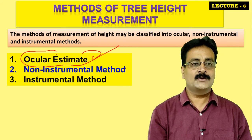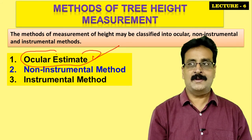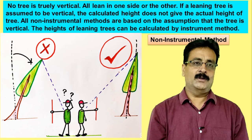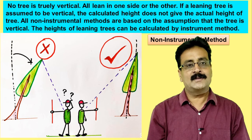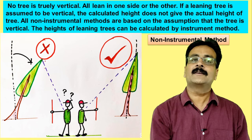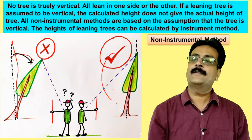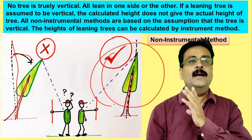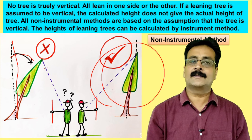In this video lecture I'll be teaching you how to measure tree height by non-instrumental method. No tree is actually vertical, but when we use the non-instrumental method we have to assume it is vertical. If the tree is not vertical, the non-instrumental method doesn't give a good result. When it is leaning from its main axis, this method is not reliable.